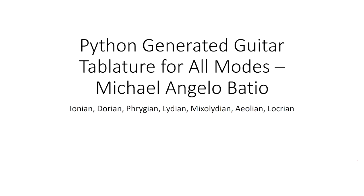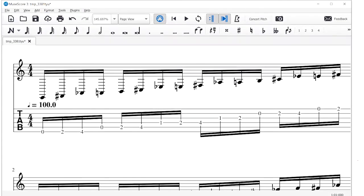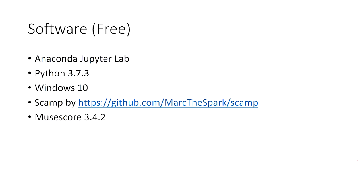At the end of this program you can expect to have a tablature music sheet like this. I have used Anaconda, JupyterLab, Python 3.7.3, Windows 10, and the SCAMP package by Marc Evanstein. This package creates a Python programming interface to generate music. I also use MuseScore 3.4.2 to convert the music XML to tablature or standard sheet music.